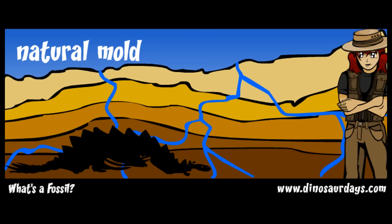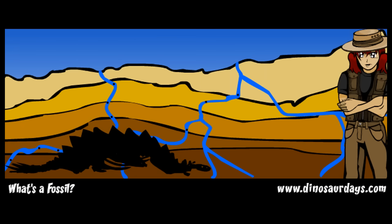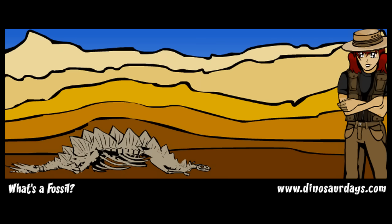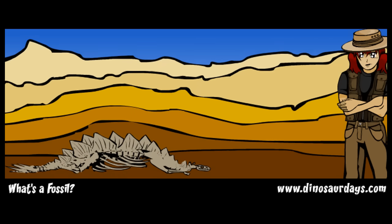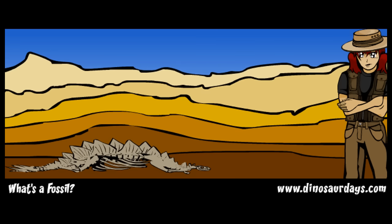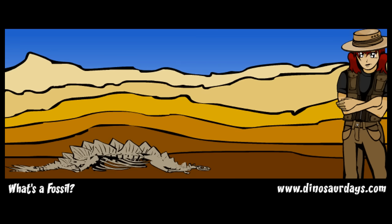Now the groundwater brings tiny pieces of rock into those empty spaces. After millions of years, these tiny rock pieces fill the mold. The rock is pressed further and further underground. Over time, the entire skeleton mold becomes solid rock.